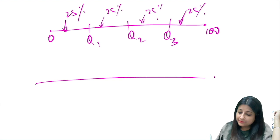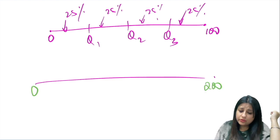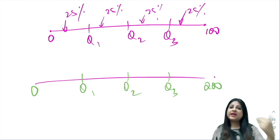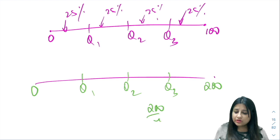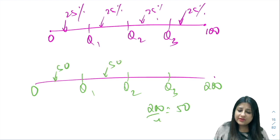Suppose I have a data set 0 to 200, so we will have quartiles Q1, Q2, Q3. It's still going to divide it into four equal parts, so 200 by 4 which is 50. Each part will be 50, 50, 50, 50.